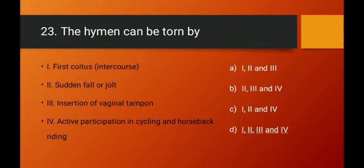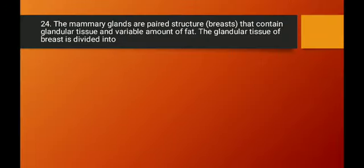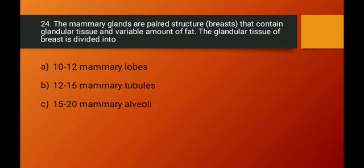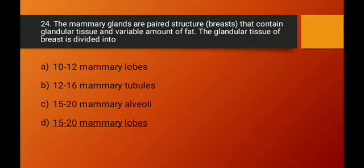Question number twenty-four: the mammary glands are paired structures (breast) that contain glandular tissue and variable amounts of fat. The glandular tissue of the breast is divided into mammary lobes. How many lobes are there? The correct answer is 15 to 20 mammary lobes. Option D is the right answer.